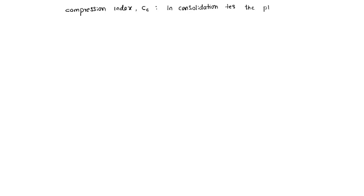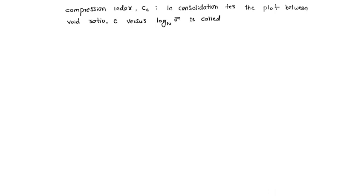The plot between void ratio E versus log sigma bar — that means logarithm of effective stress — the plot between void ratio versus log sigma bar is called the compression curve.